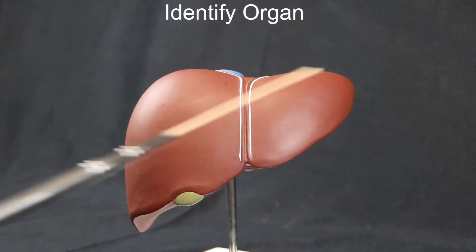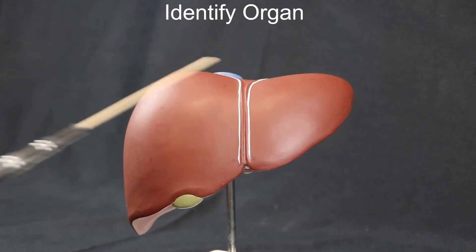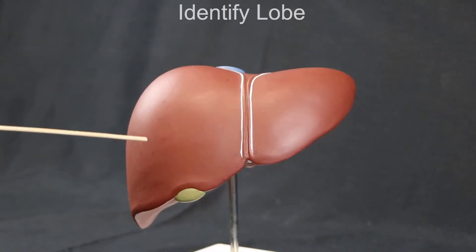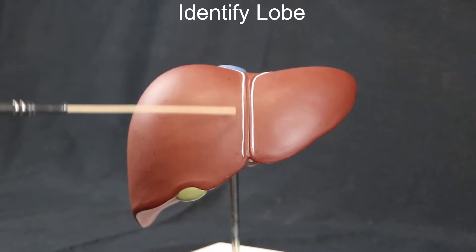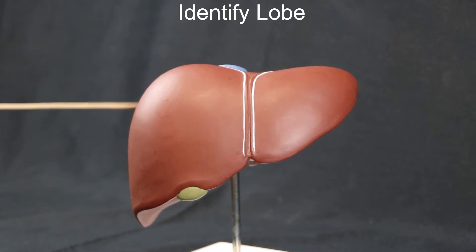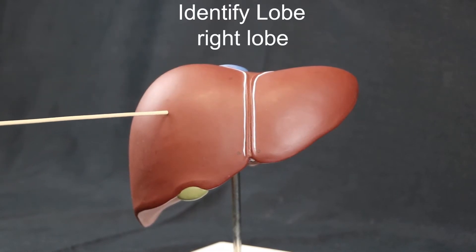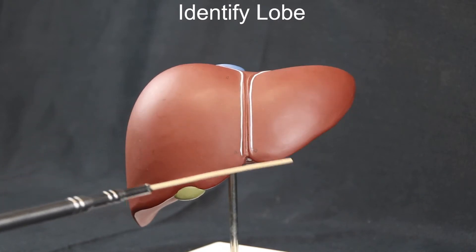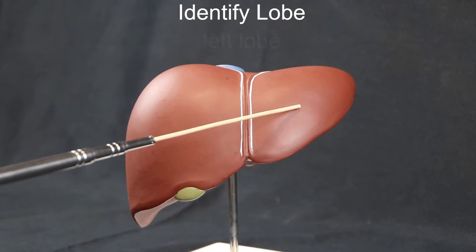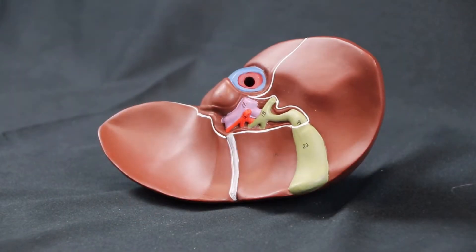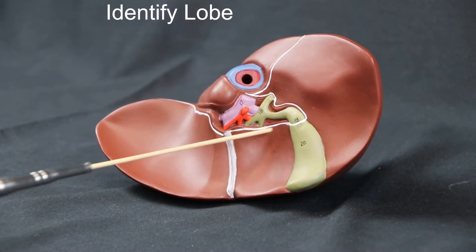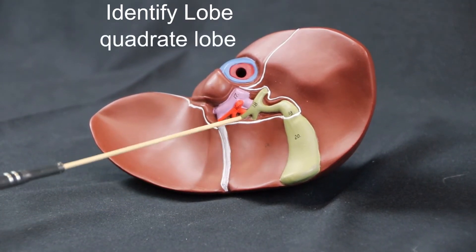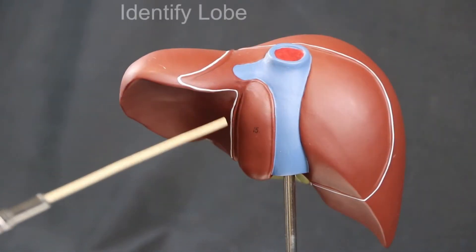ID organ: liver. ID lobe: right lobe. ID lobe: left lobe. ID lobe: quadrate lobe.